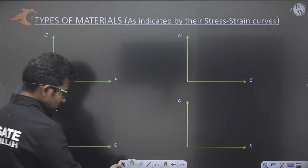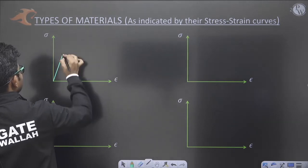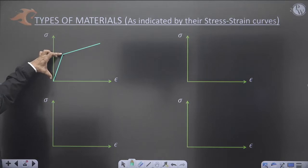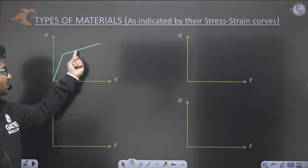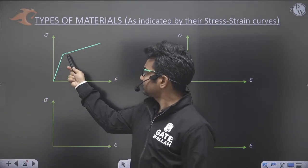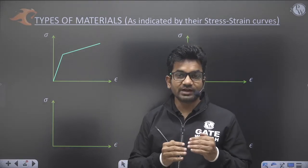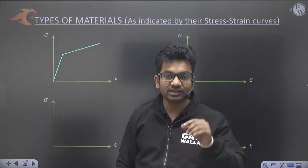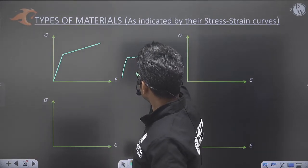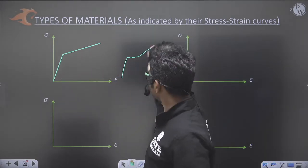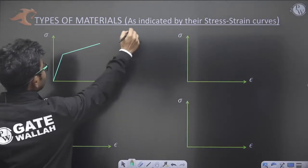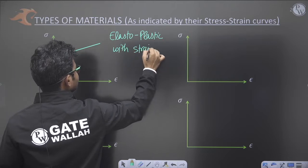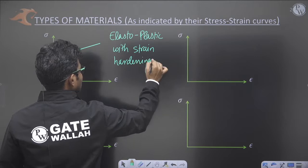After elasto-plastic, there is another type which is also elasto-plastic, but with strain hardening. The first region shows perfectly elastic behavior. In the plastic range, deformation does not occur at a constant stress — we have to keep increasing the stress to increase the deformation. This portion is called strain hardening, seen in mild steel as well. This is called elasto-plastic with strain hardening.